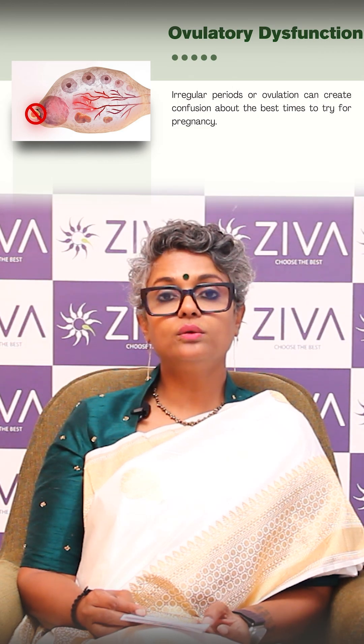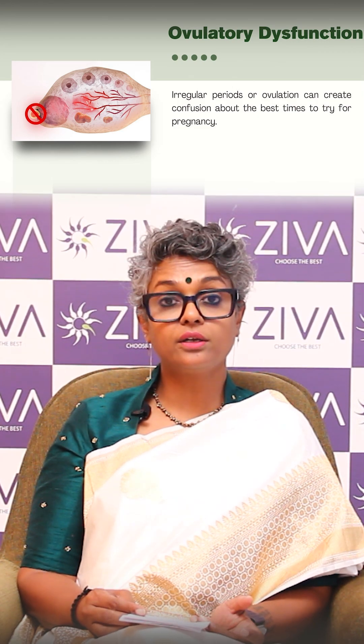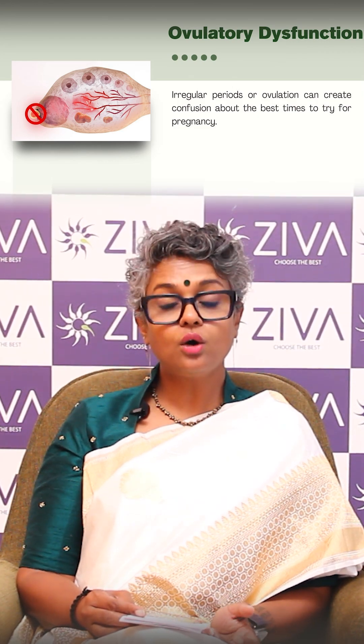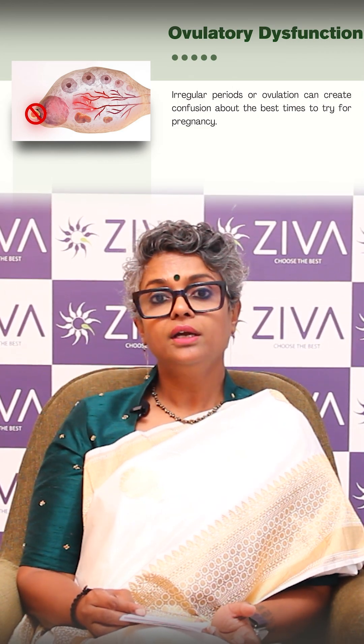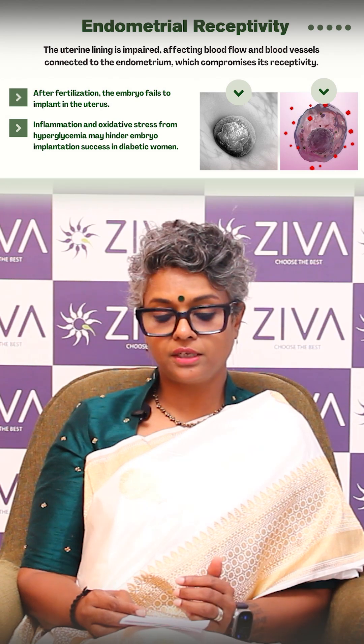Diabetes can also cause ovulatory disturbances. You can have irregular periods or irregular ovulation on the whole. This can cause confusion in knowing when to have unprotected intercourse to try for pregnancy.